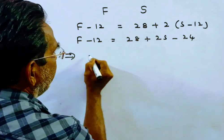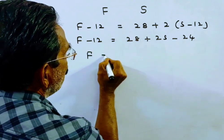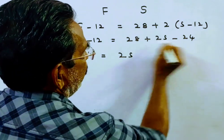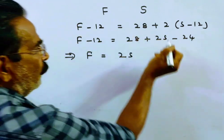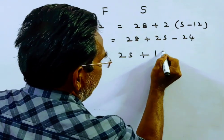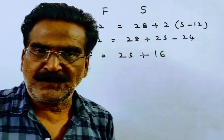It implies F is equal to 2S, 28 minus 24 is 4, 4 plus 12 is 16. Friends, this is the first statement.